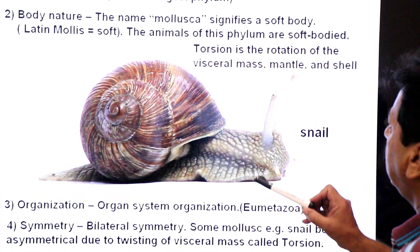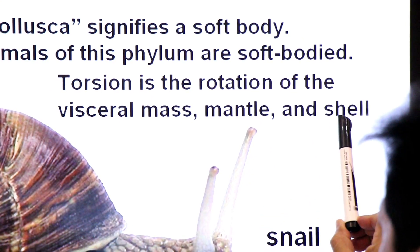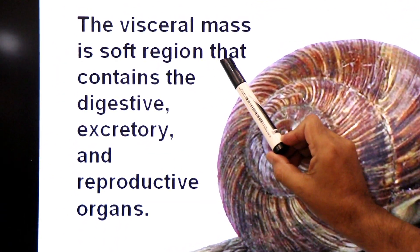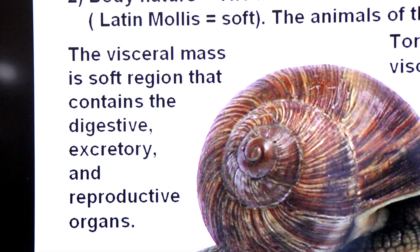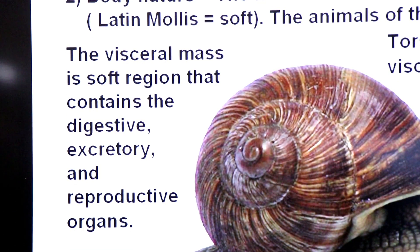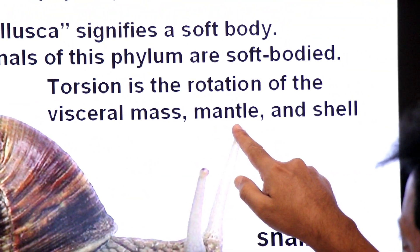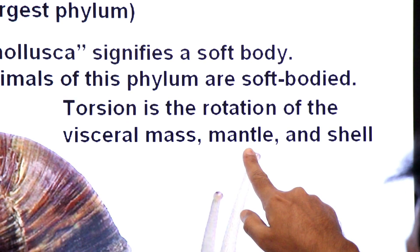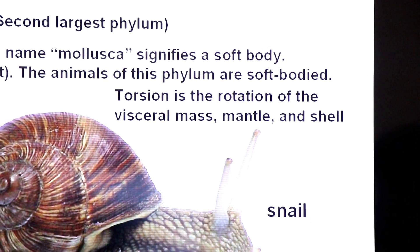So what is torsion? Torsion is the rotation or coiling of the visceral mass, mantle and shell. The visceral mass is the soft region that contains digestive, excretory and reproductive organs. The visceral mass inside the shell also coils through about 180 degrees. The glandular cells of the mantle secrete calcareous shell. So visceral mass, mantle and shell coiling together is called torsion.